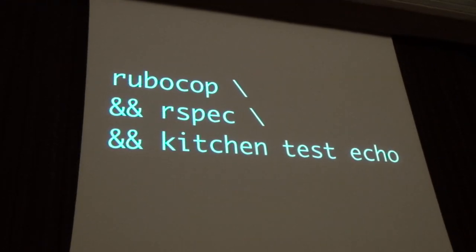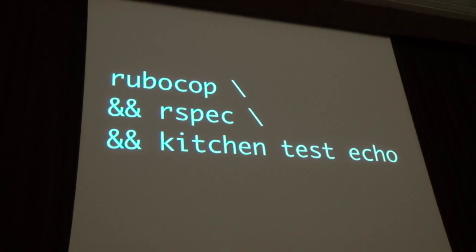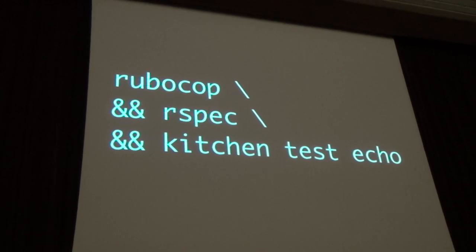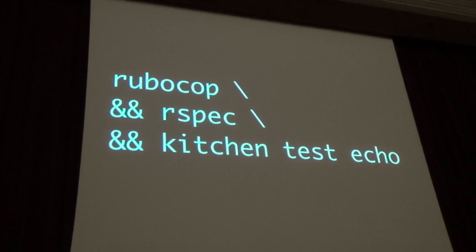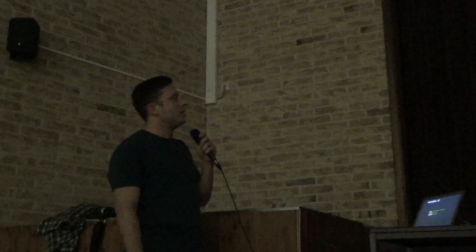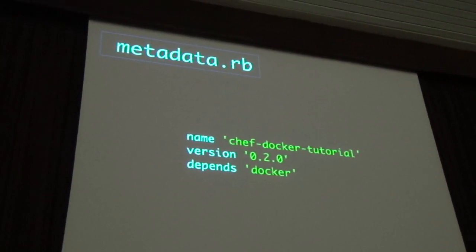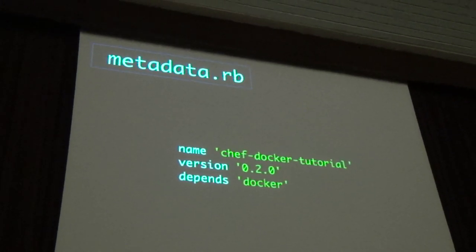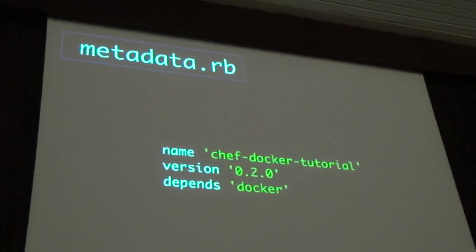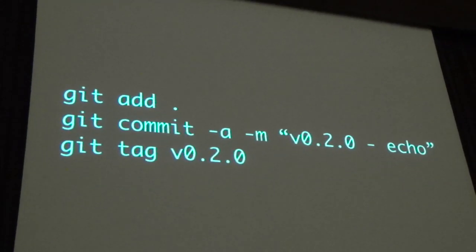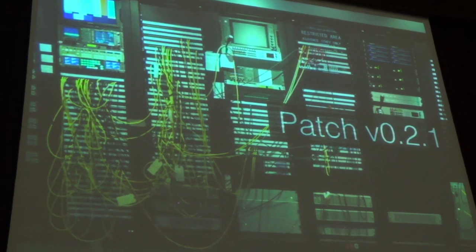I can write a test: if I run 'echo hi | netcat localhost 7' it's going to exit cleanly and match my regex. Then Rubocop, RSpec, final tests, 'kitchen test' — which is a state machine: kitchen create, converge, verify, destroy — all done automatically. Good for plugging into CI pipelines. Don't forget to update the metadata and publish the artifact.